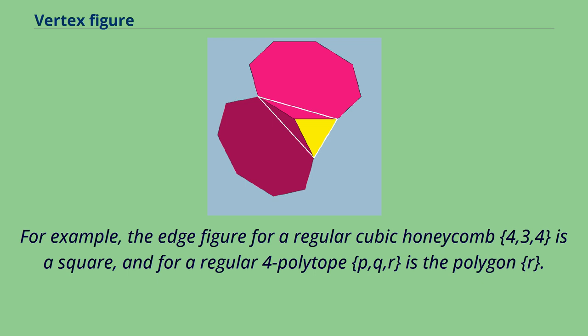For example, the edge figure for a regular cubic honeycomb {4,3,4} is a square, and for a regular 4-polytope {p,q,r}, it is the polygon {r}.